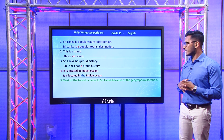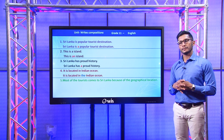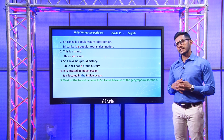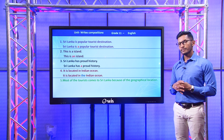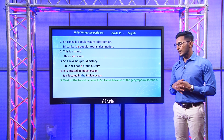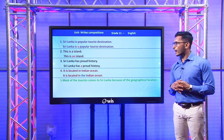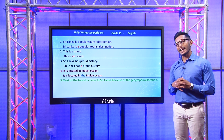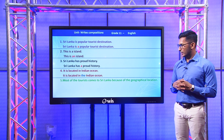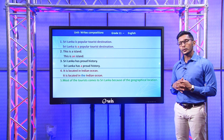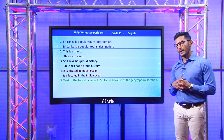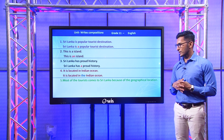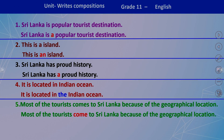Fifth sentence: 'Most of the tourists comes to Sri Lanka because of the geographical location.' Can you spot the mistake? The mistake is with the verb 'comes.' When you learn simple present, remember: if the subject is singular only, we add S to the verb. The subject here is 'most of the tourists,' which is plural. So we cannot add S to the verb come. It should be: Most of the tourists come to Sri Lanka because of the geographical location.